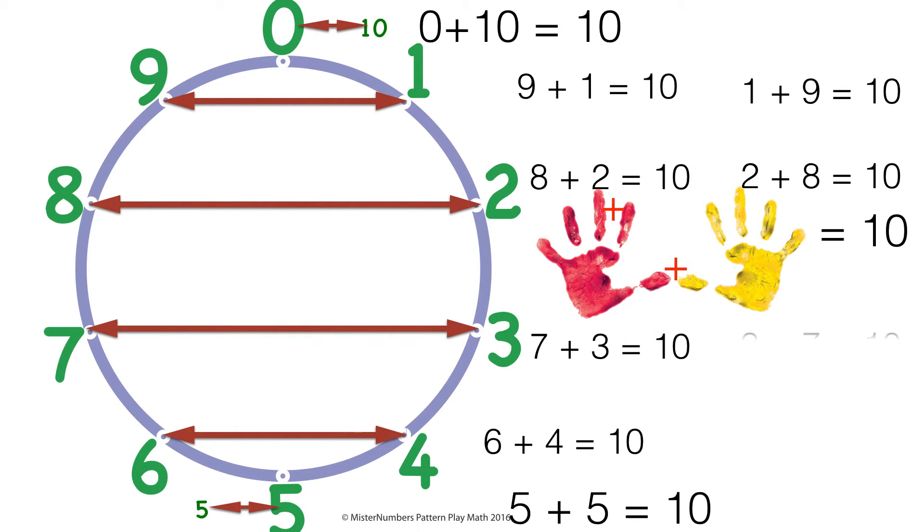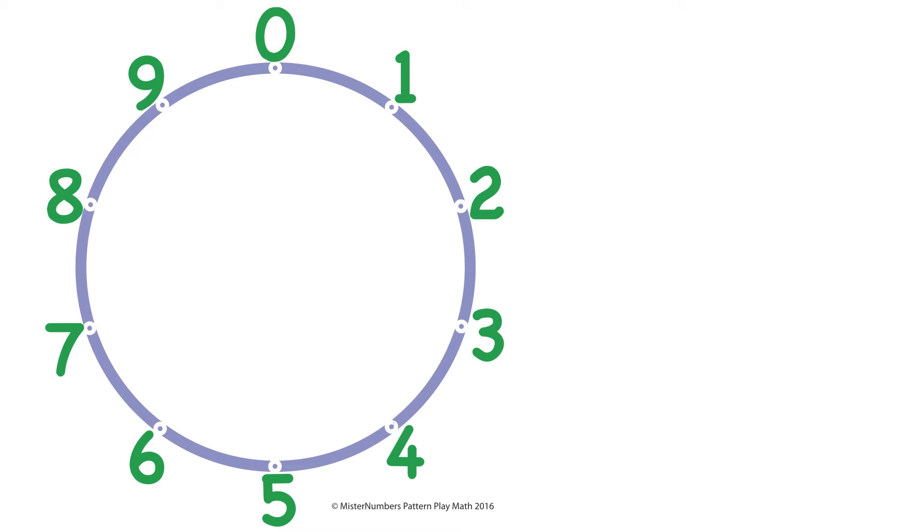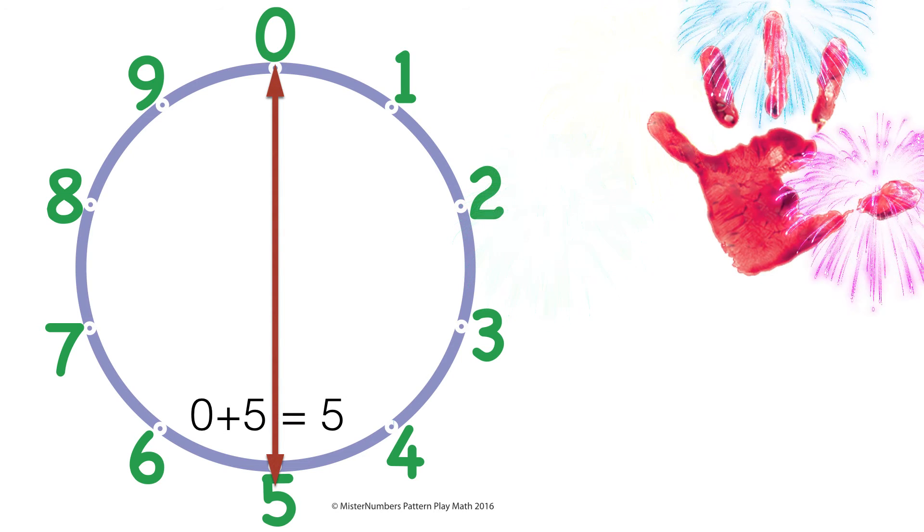Look at all those numbers that the number wheel shows us add up to 10. Now today we're going to find the numbers that add up to the fingers on one hand, 5. The first one is our top and bottom numbers, 0 and 5, and it goes straight up and down, a vertical line.